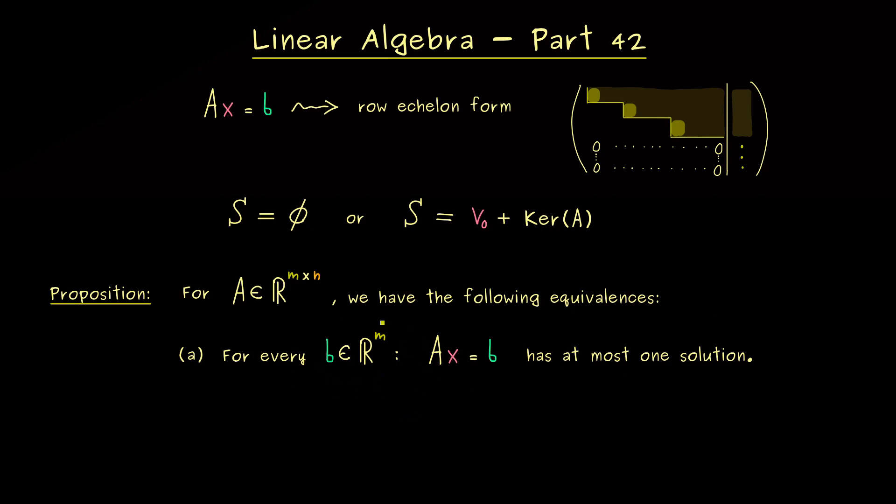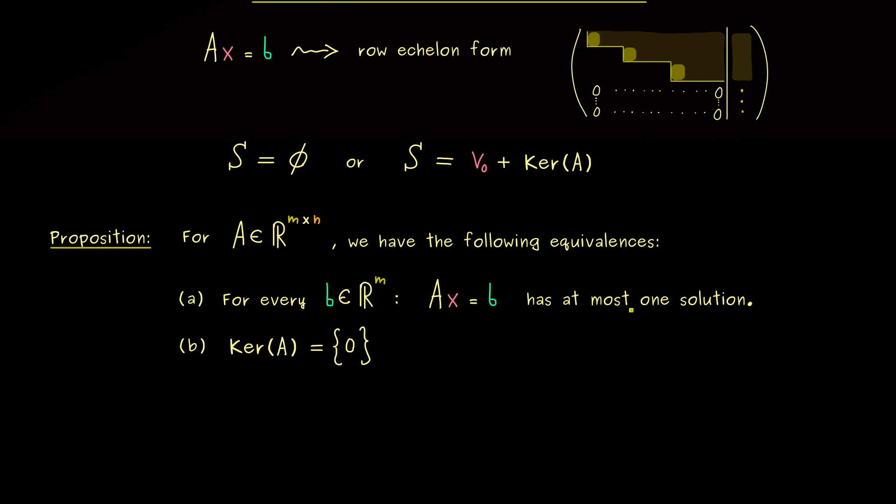Okay, so now we see, depending what b is, we are either in this case or in that case. However, please note here, if b is the zero vector, we already know that we are in the second case here. There, the solution set is equal to the kernel of A, which now has to be as small as possible. This means it should only contain the zero vector as a solution. So we see, having a trivial kernel is equivalent to the statement that Ax = b has at most one solution for every b. Therefore, we can remember that the uniqueness for solutions is completely given by the kernel of the matrix.